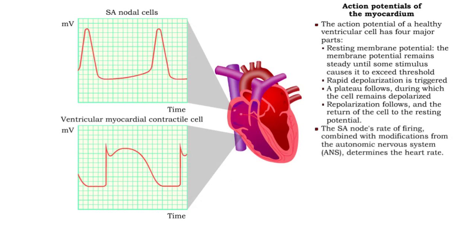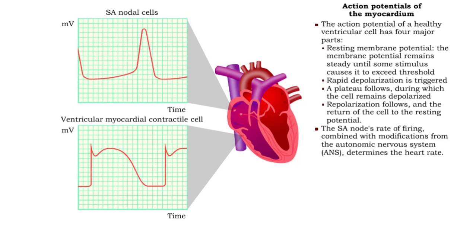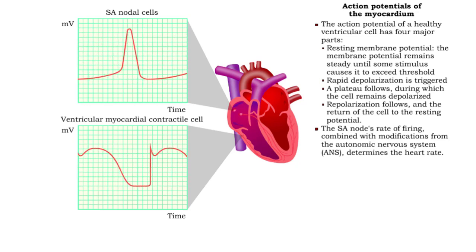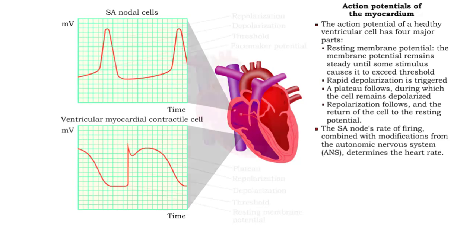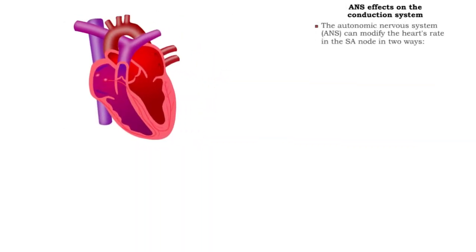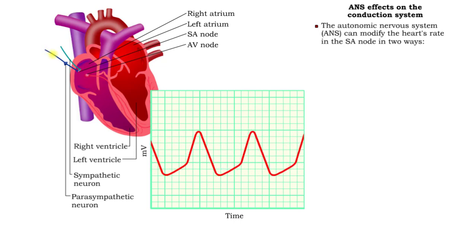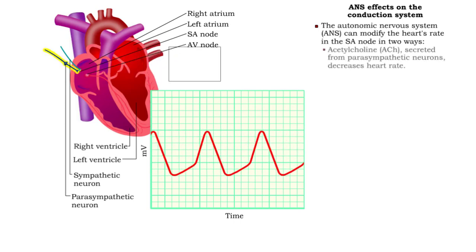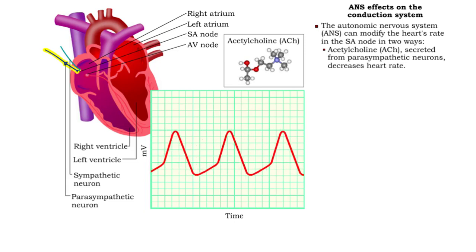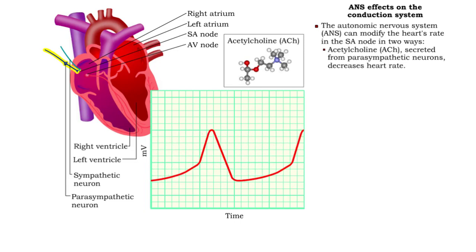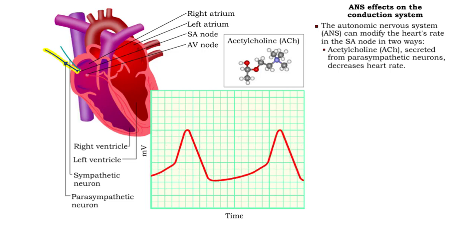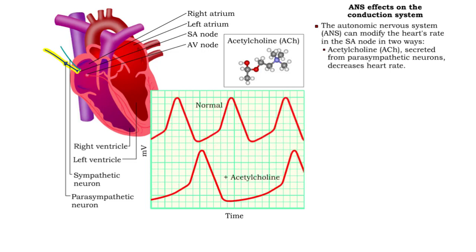The SA node's rate of firing, combined with modifications from the autonomic nervous system, determines the heart rate. The autonomic nervous system can modify the heart's rate in two ways. The hormone acetylcholine, secreted from parasympathetic neurons, decreases SA node firing to about 75 action potentials per minute, decreasing heart rate. This heart rate is considered normal and healthy for a resting heart.